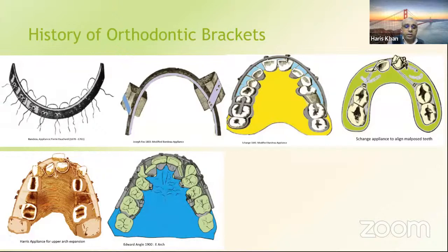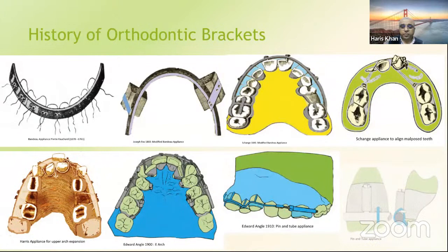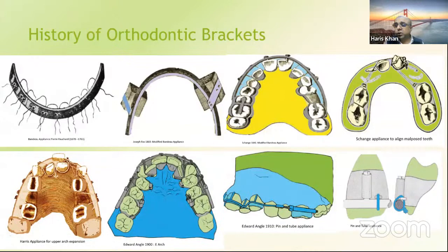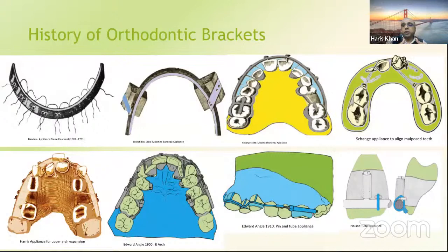In 1890, our textbooks say Edward Angle made his first E-arch, and then the ribbon arch, pin and tube. When I went through the literature, the pin and tube appliance was actually first made in 1886 — the initial concept was given by Johnson. Later in 1910, it was attributed to Edward Angle, but most textbooks like Contemporary Orthodontics say it was made by Angle. The original concept of pin and tube was given by Johnson in 1886. In Angle's time, the concept was simply to align the teeth and treat cases non-extraction.